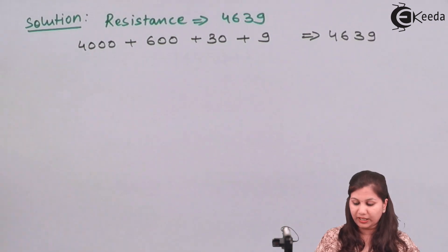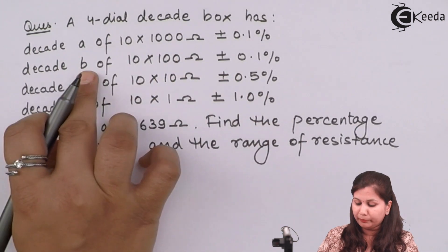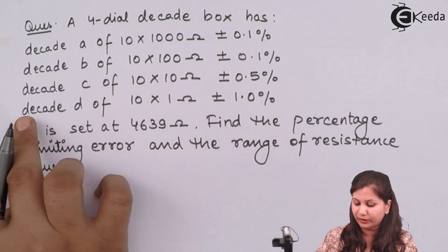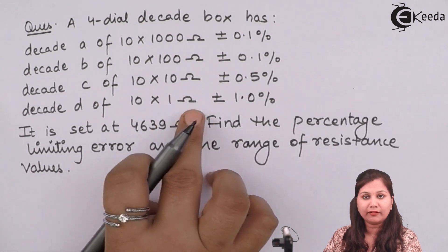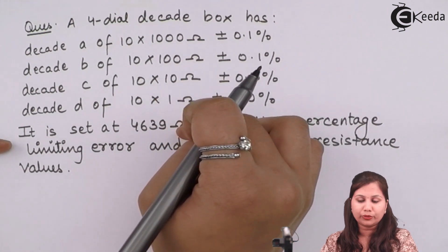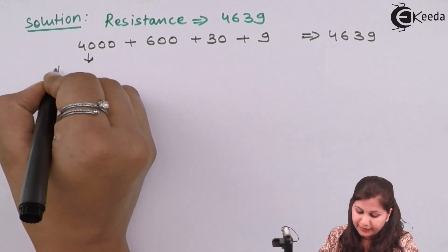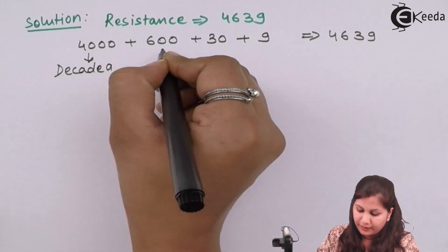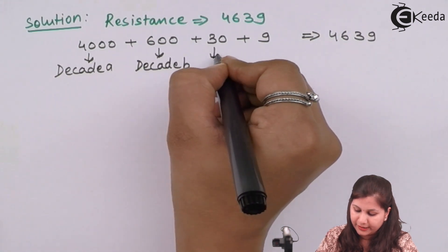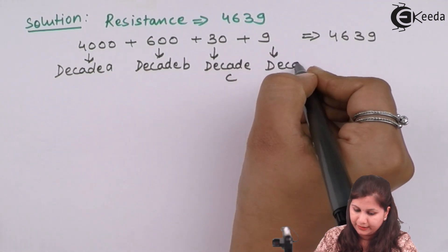From the question, decade A reads the 1000s value, decade B reads the 100s value, decade C reads the 10s value, and decade D reads the units value — so 1000, 100, 10, and units. Therefore, 4000 is measured by decade A, 600 by decade B, 30 by decade C, and 9 by decade D.